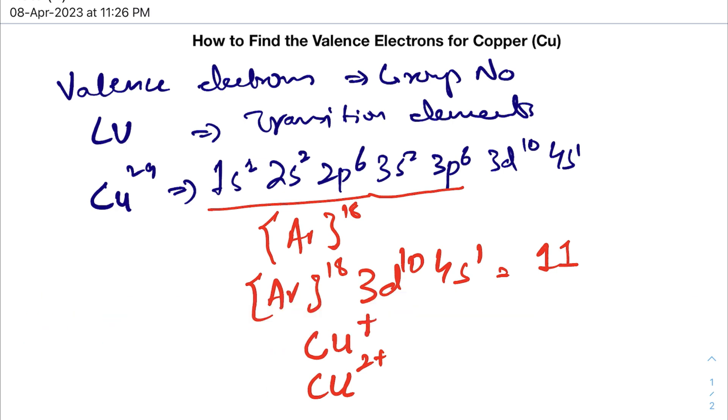But in terms of the electronic configuration of transition elements, outside the noble gases, the outside the condensed form, the remaining numbers are considered as the valence electron of that element. So in this case the copper is having 11 valence electrons. Thank you so very much.